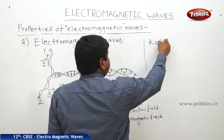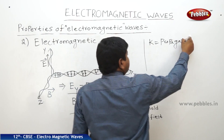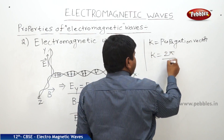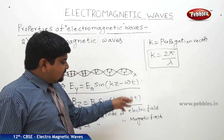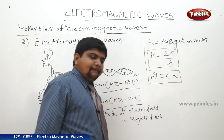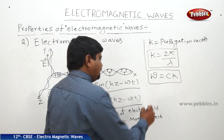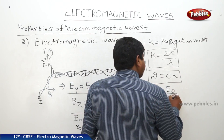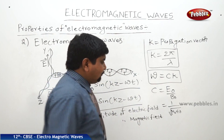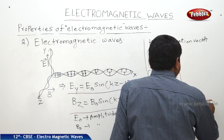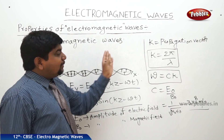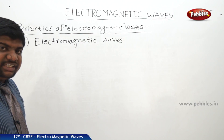We know that k is the propagation vector, where k = 2π/λ, and ω is the angular frequency, where ω = ck. From these expressions we can find that c = E₀/B₀ = 1/√(μ₀ε₀), which gives an approximate value of 3 × 10⁸ meters per second — the speed of light. This describes the propagation of electromagnetic waves along the direction of the vectors.